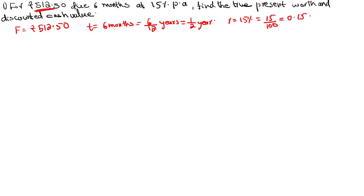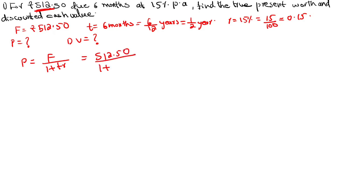Now, the first question is present value — present value is equal to question mark. For present value, we have the formula P equals F divided by (1 plus t×r). So it is equal to 512.50 divided by (1 plus 0.5 × 0.15). Simplifying using a calculator, the present value P is equal to rupees 476.44.